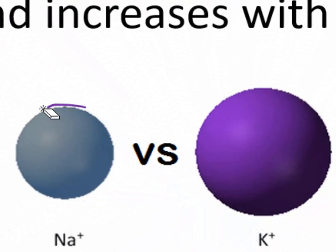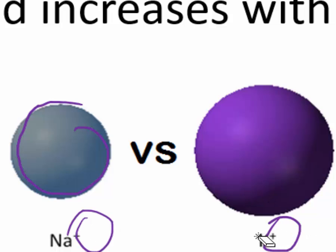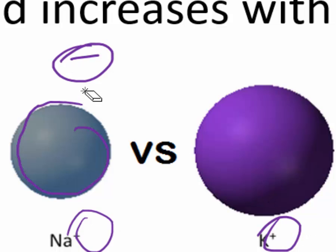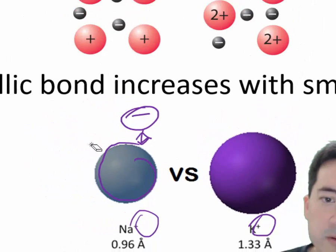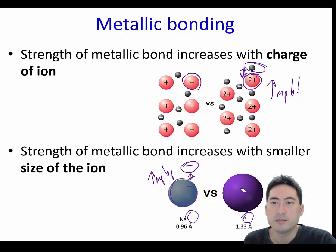Same with this here — they both have a 1+ charge, but this one is smaller, so it will be able to attract the delocalized electrons better. So it'll have a higher melting point and boiling point than the potassium ion.